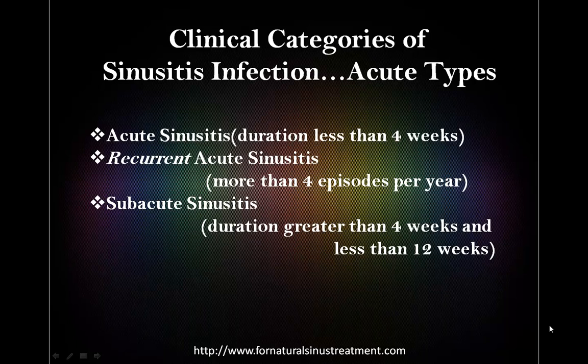The third category is subacute sinusitis. Subacute sinusitis represents a continuum of natural progression of acute sinusitis that has not resolved. This condition is diagnosed after a 4-week duration of acute sinusitis and lasts up to 12 weeks. It may warrant therapy different from either acute or chronic sinusitis. Patients with subacute sinusitis may or may not have been treated for the acute phase, and the symptoms are less severe than in acute sinusitis, so fever would not be considered a major factor. The clinical factors required for the diagnosis of subacute sinusitis are the same as those for chronic sinusitis. Subacute sinusitis usually resolves completely after an effective medical regimen.